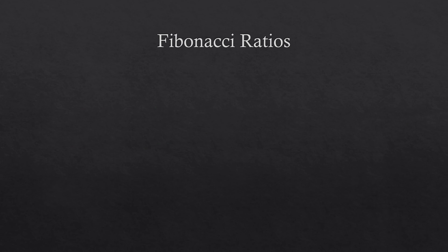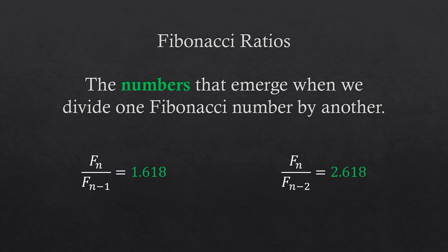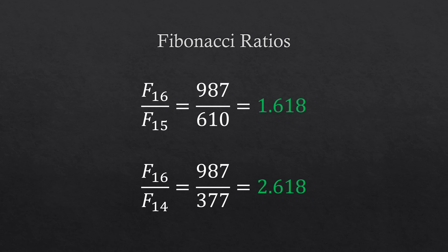Fibonacci ratios are the numbers that appear when we divide one Fibonacci number by another. For example, if we divide one Fibonacci number by the previous number, we get the golden ratio, which is 1.618. If we divide a number by the number two positions back, we get 2.618. For instance, if we divide the 16th Fibonacci number, 987, by the 15th Fibonacci number, 610, we get 1.618. If we divide the 16th Fibonacci number, 987, by the 14th Fibonacci number, 377, we get 2.618.